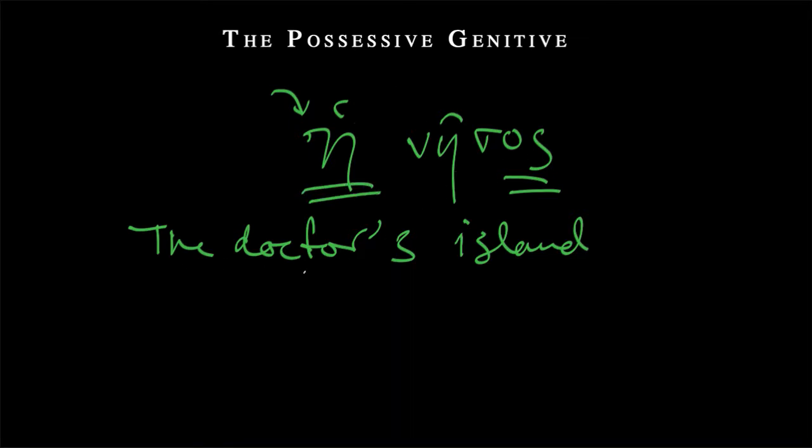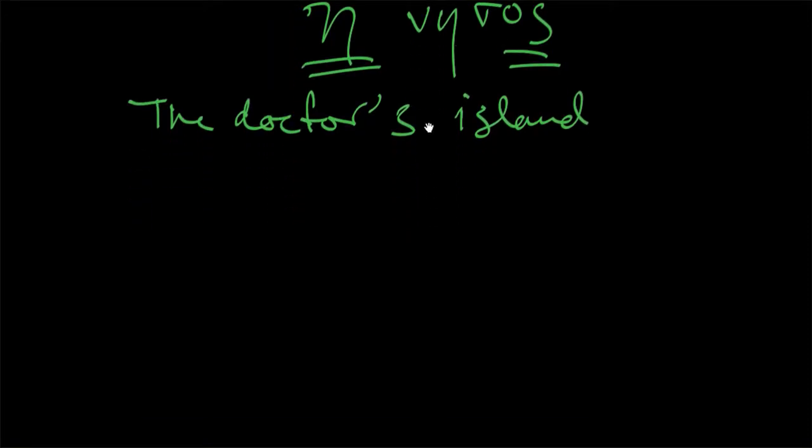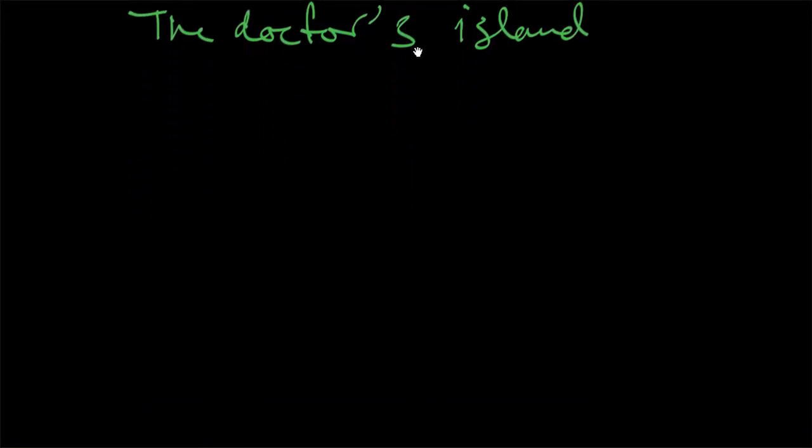So we want to say, let me maybe scroll down, we want to say the doctor's island. So there are two ways to do this, mainly, in Greek. We're going to say, first, the island, and then be a little bit more specific. The one that's of the doctor.